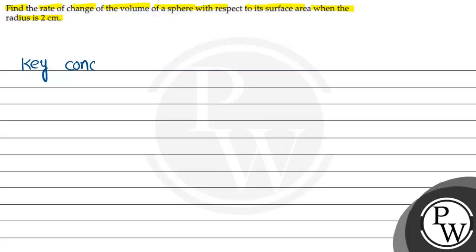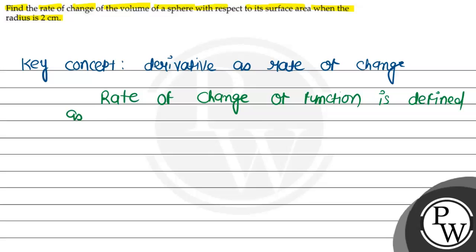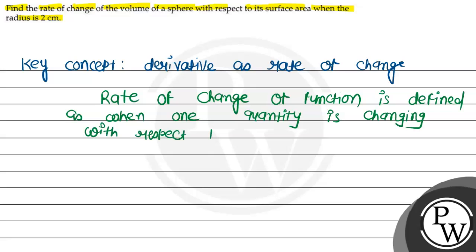Let's see the key concept. The key concept of this question is derivative as rate of change. Rate of change of a function is defined as when one quantity is changing with respect to another quantity.